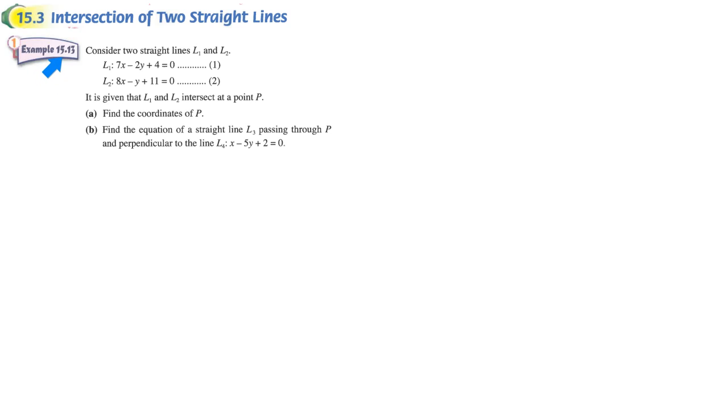Your textbook example 15.13. This is including some application of the previous section in part B. Part A is what we learned just now about finding the point of intersection of two straight lines.